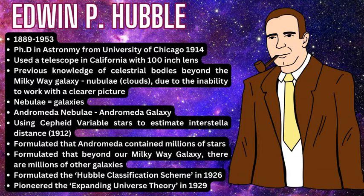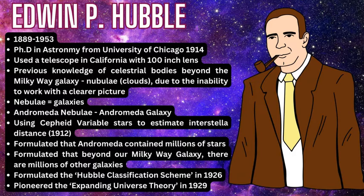Then along came Edwin Hubble, who completed his PhD in astronomy from the University of Chicago in 1914. He went to California to work with a telescope with a hundred-inch lens — at the time the largest in the world — able to collect light and data in much more detail and clarity. These nebulae understood to be further than the Milky Way were now being analyzed with much higher scrutiny.